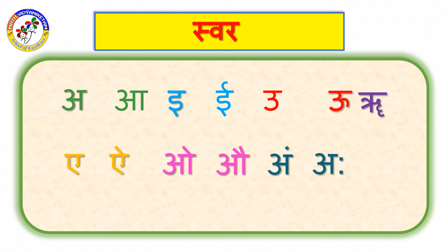Swar means vowels. A, A, I, E, U, U, REE. A, I, O, O, M.